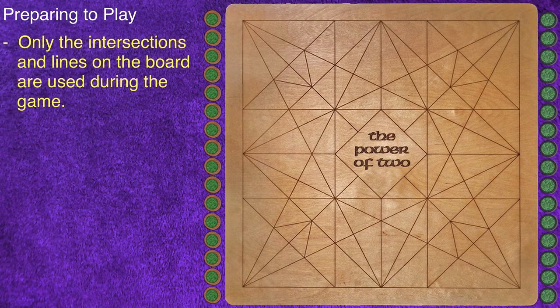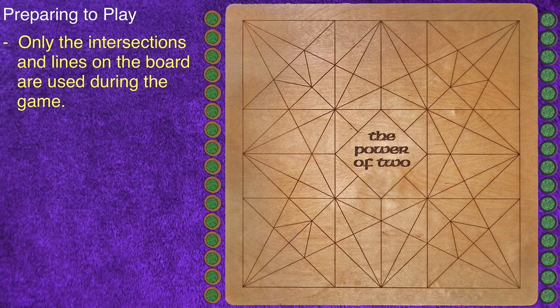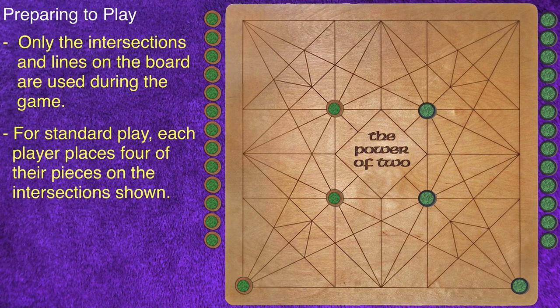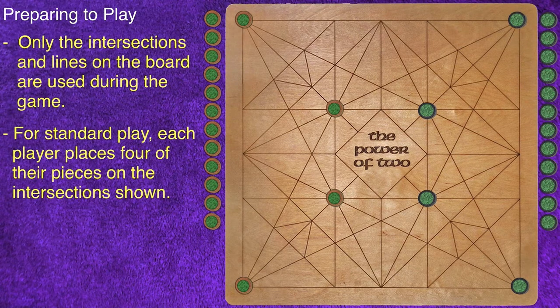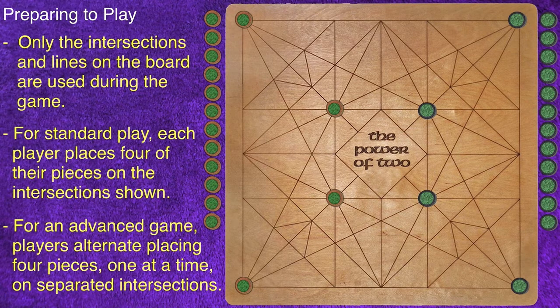The gameplay occurs on the lines and intersections laser-inscribed on the wooden board. For a standard game, each player places four of their pieces on the intersections shown here and diagrammed in the rulebook. If the players agree to play an advanced game, they alternate placing their four pieces one at a time on non-adjacent intersections.